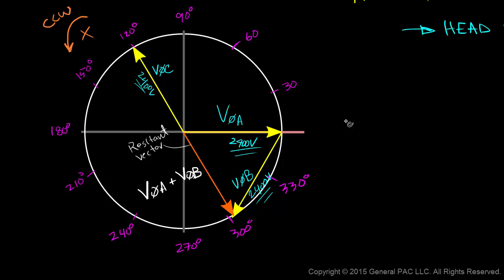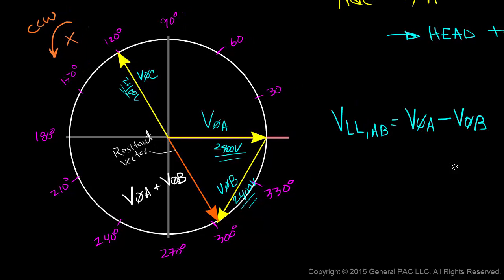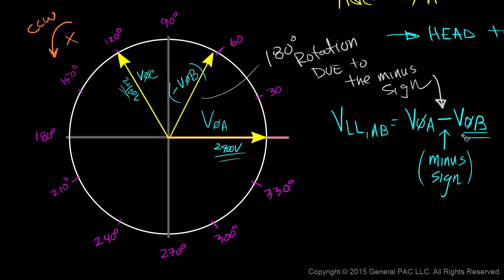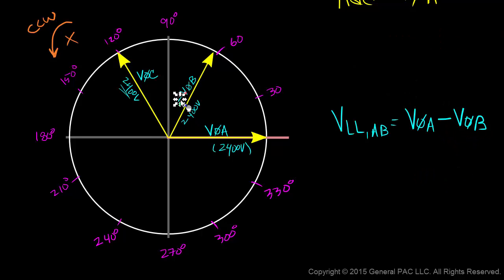However, the equation that we need to evaluate is phase A voltage minus phase B voltage. Since there is a minus sign associated with phase B voltage, we need to take phase B voltage and rotate it 180 degrees. It's very important to keep in mind that the 180 degrees rotation is due to the minus sign in front of phase B voltage. Okay, so we have phase A voltage and we have the negative of phase B voltage. We're going to perform the head-to-tail method. So we're going to take the tail of negative phase B voltage and connect it to the head of phase A voltage.